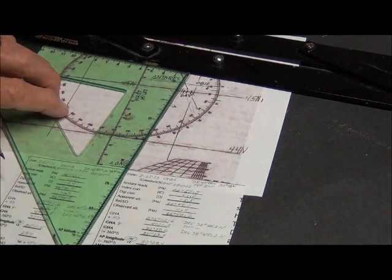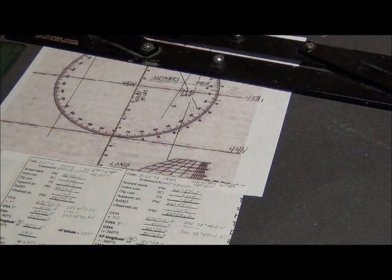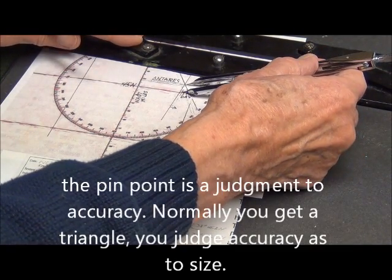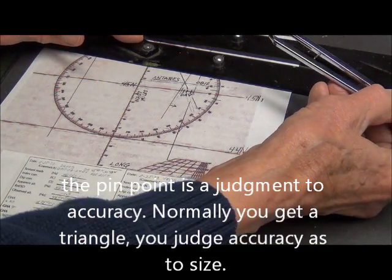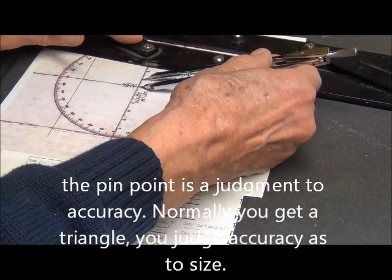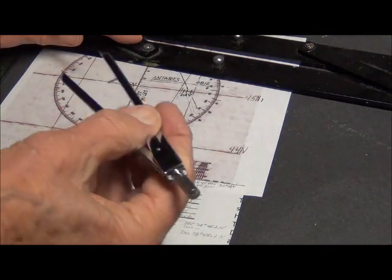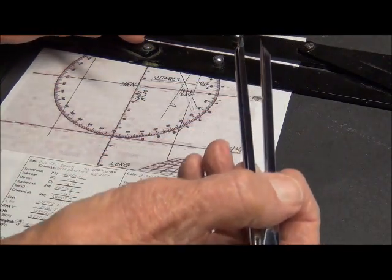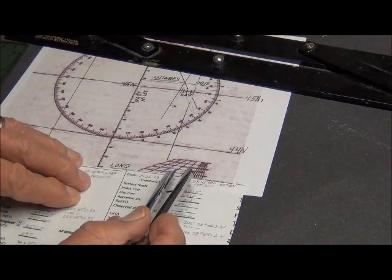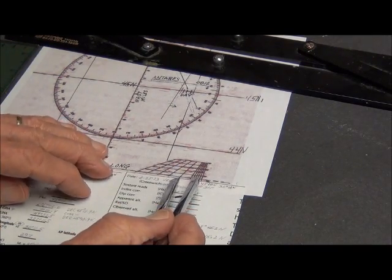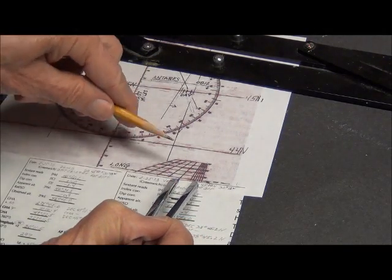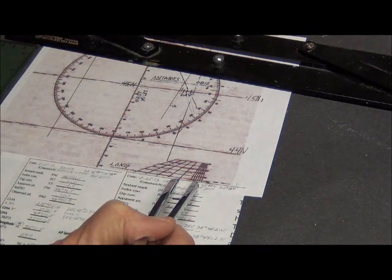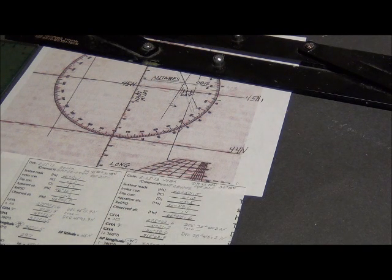So that's how you plot. Now this becomes a pinpoint fix, so we can now measure off the latitude and longitude. The latitude is 4509 and the longitude of the fix is 30 down to this scale. That's 10, so 14.